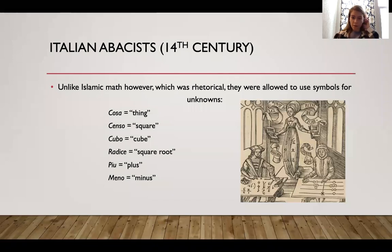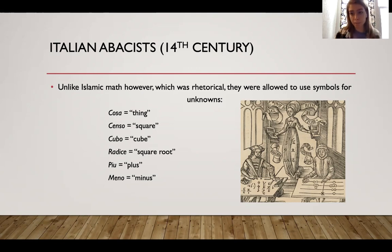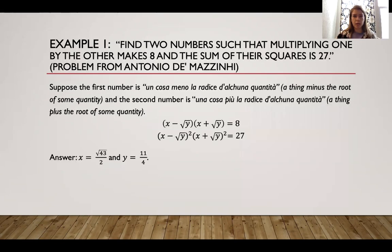Unlike Islamic math, however, which was very rhetorical and didn't use a lot of symbols, they were allowed to use symbols for unknowns. They came up with Italian words to mean certain things: kosa means thing, censo means square, cubo means cube, radisa means square root, and plus and meno means minus. Those were used in the problems.